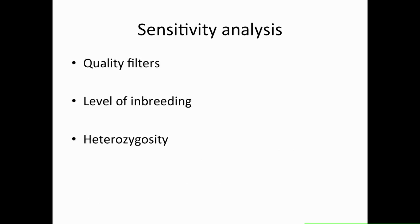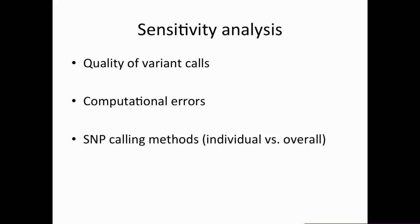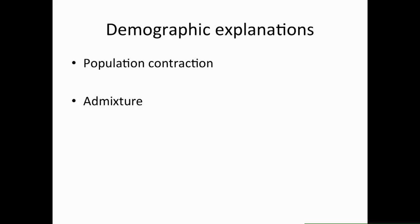We were really surprised by this result, so we performed sensitivity analyses to confirm robustness. We used different quality filters, filtered for different levels of inbreeding, and looked at the effect of masking or not masking heterozygous bases, since there is residual heterozygosity in this panel. We also examined the relationship between variant call quality and heterozygosity, and used several different computational methods to calculate Tajima's D and multiple SNP calling methods. Our results were robust to all of these variations, so it does not appear to be a methodological artifact.